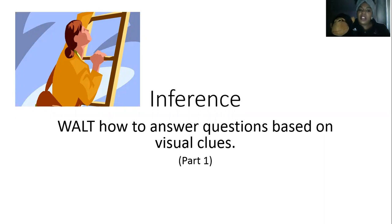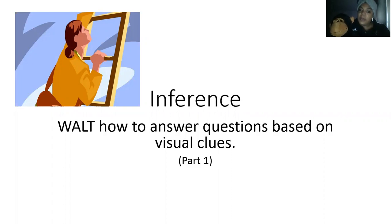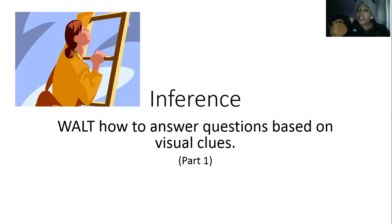Today we are learning how to answer questions based on visual clues. We're going to look for clues in pictures, try and work out what's happening — and that is a reading skill called inference, to infer. We can do it with pictures, with films, with texts, with things that are said. We try and infer things that are not said — basically read between the lines or draw our own conclusions.